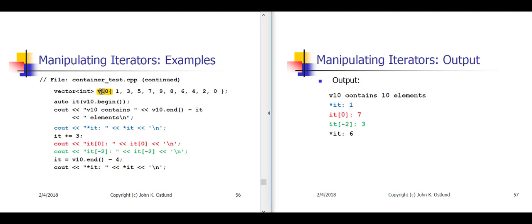So v10 here is a vector of int. It happens to contain 10 values: 1, 3, 5, 7, 9, 8, 6, 4, 2, 0.